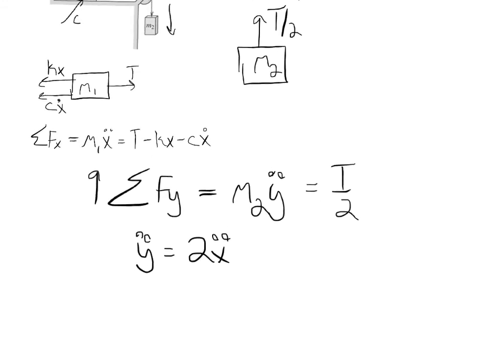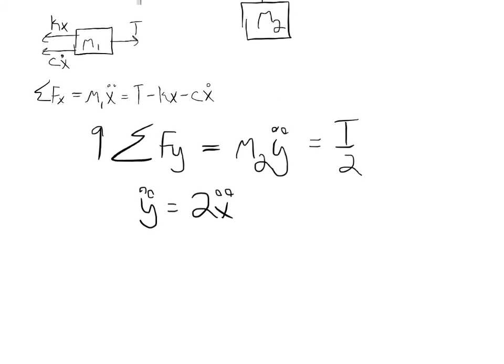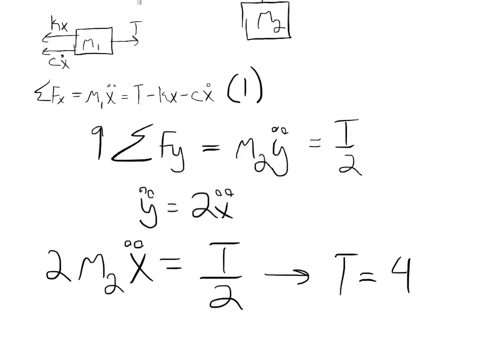Now, I essentially rewrite that again and just get in terms of t so I can plug it into the equation up here so that I get t is equal to 4m2 x double dot.